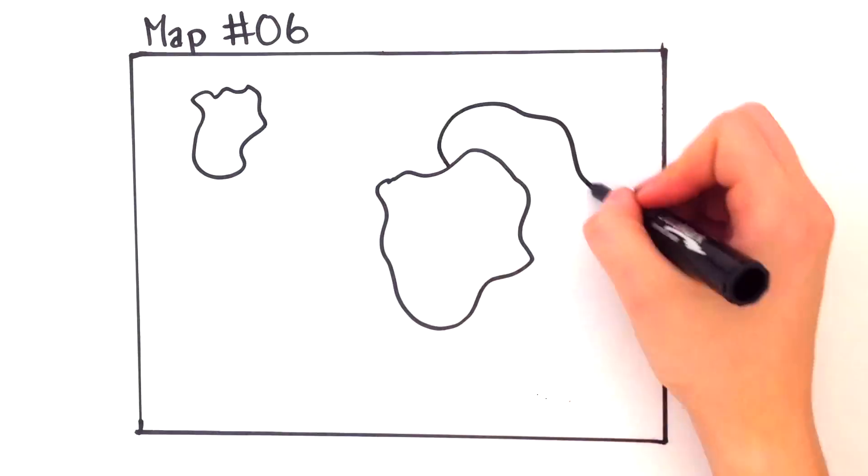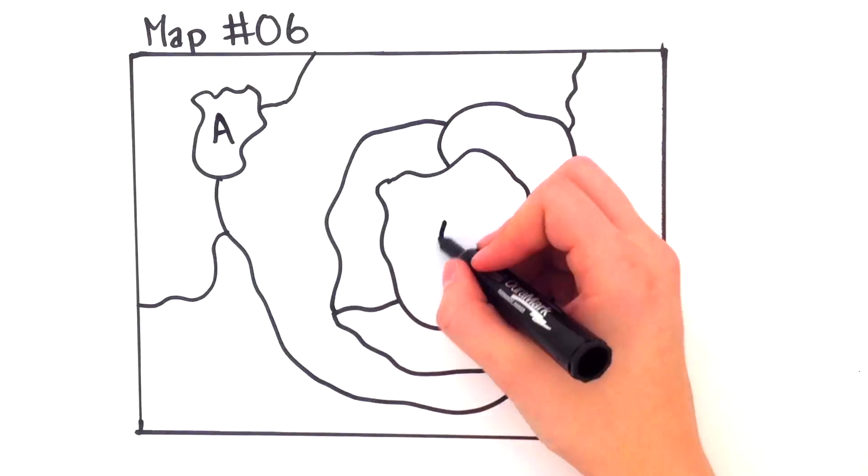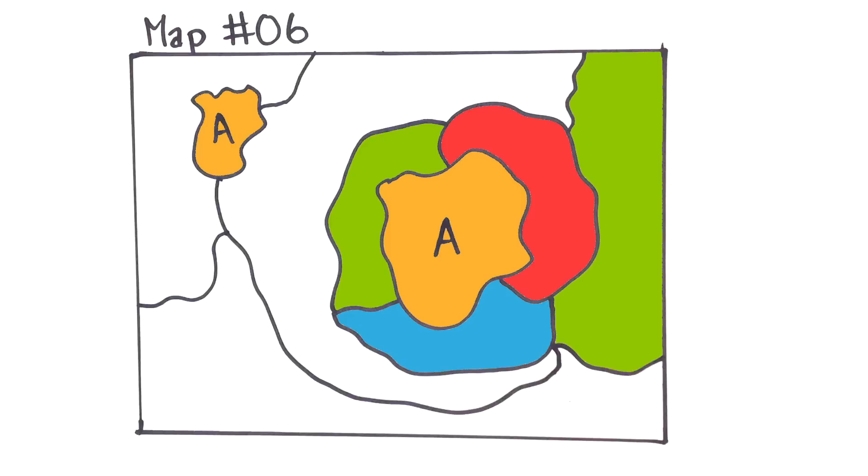Now you might see that this idea doesn't always hold up for maps in every case. Sometimes countries occupy more than one region, such as Alaska being part of the United States. For example, if country A occupied two regions and was bordered by other countries, you might need five colors or more.